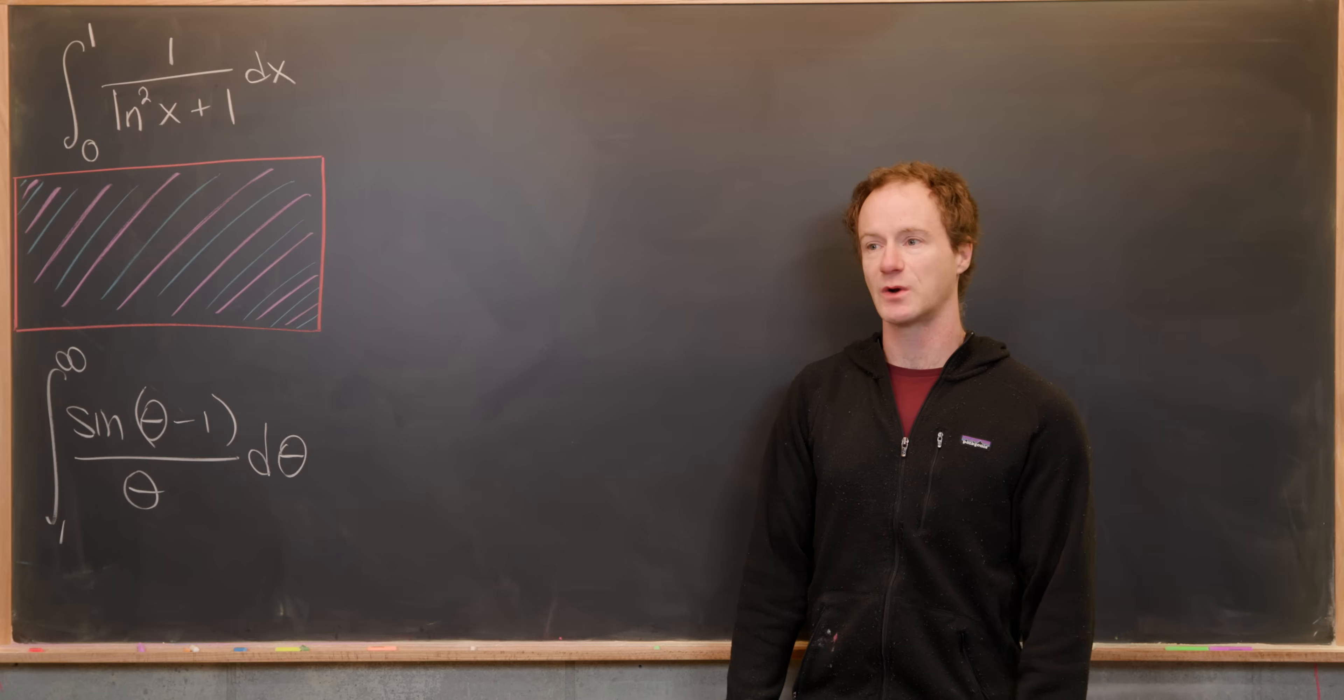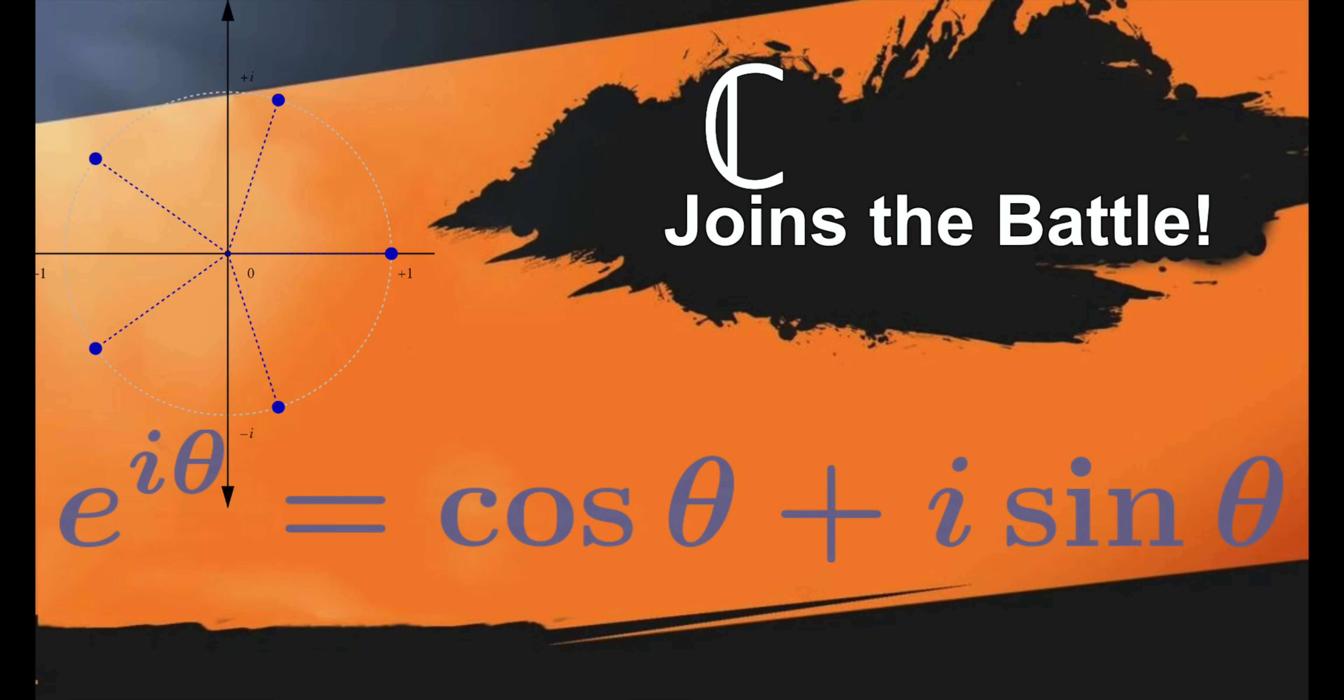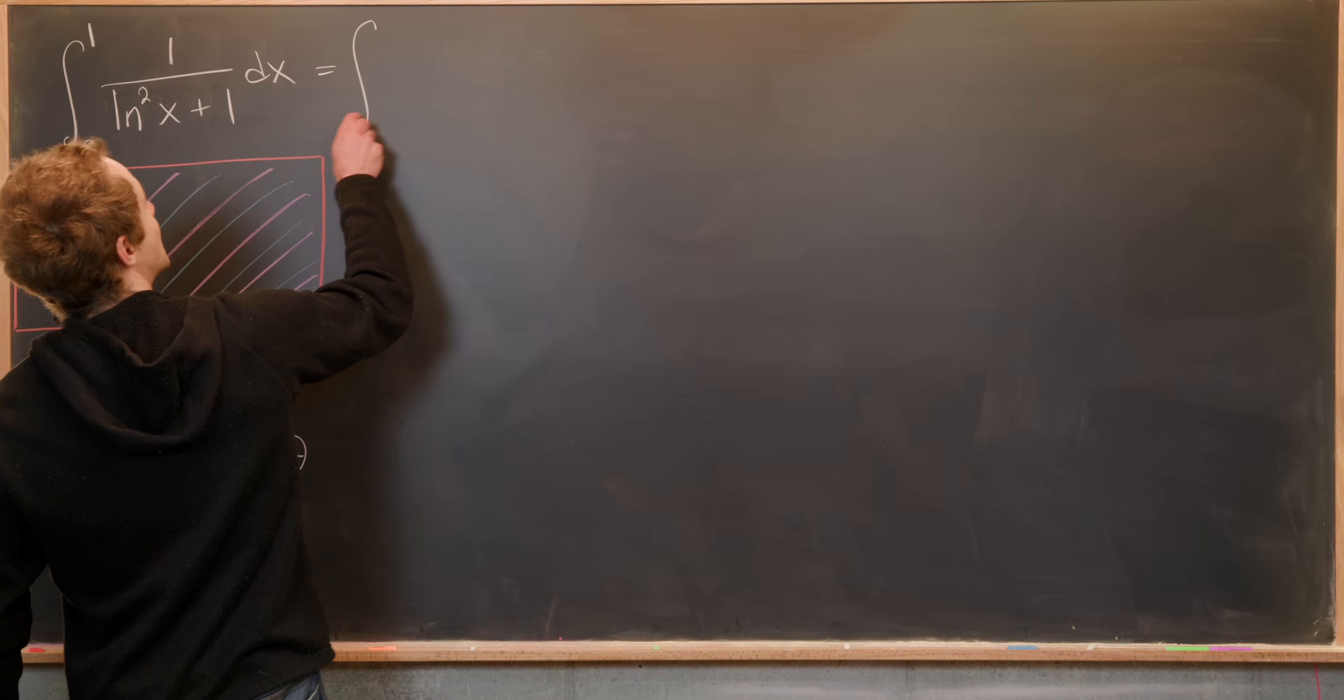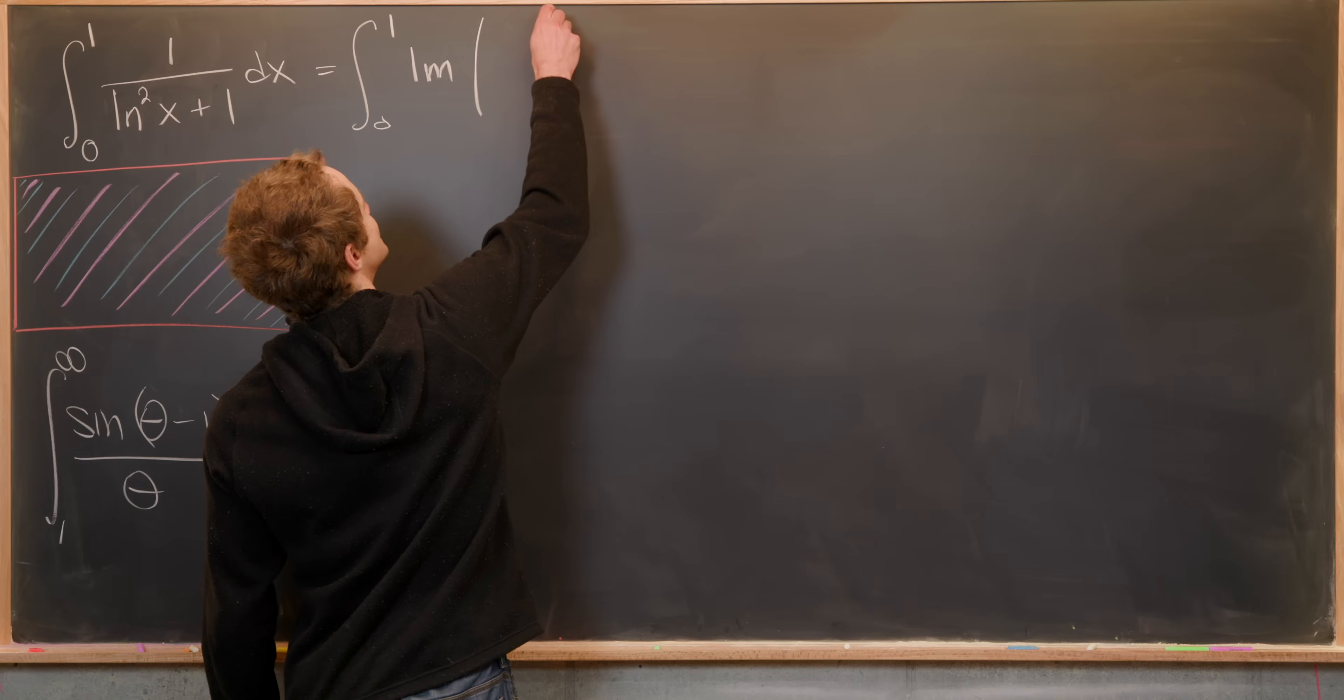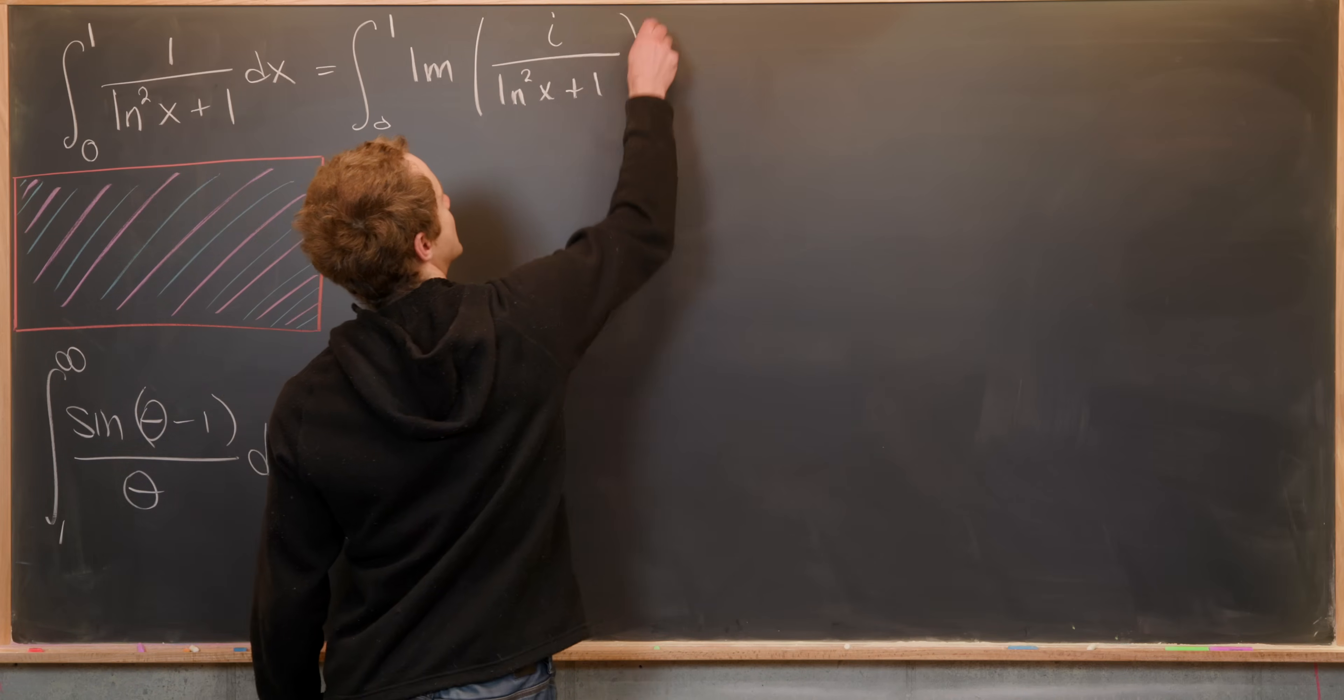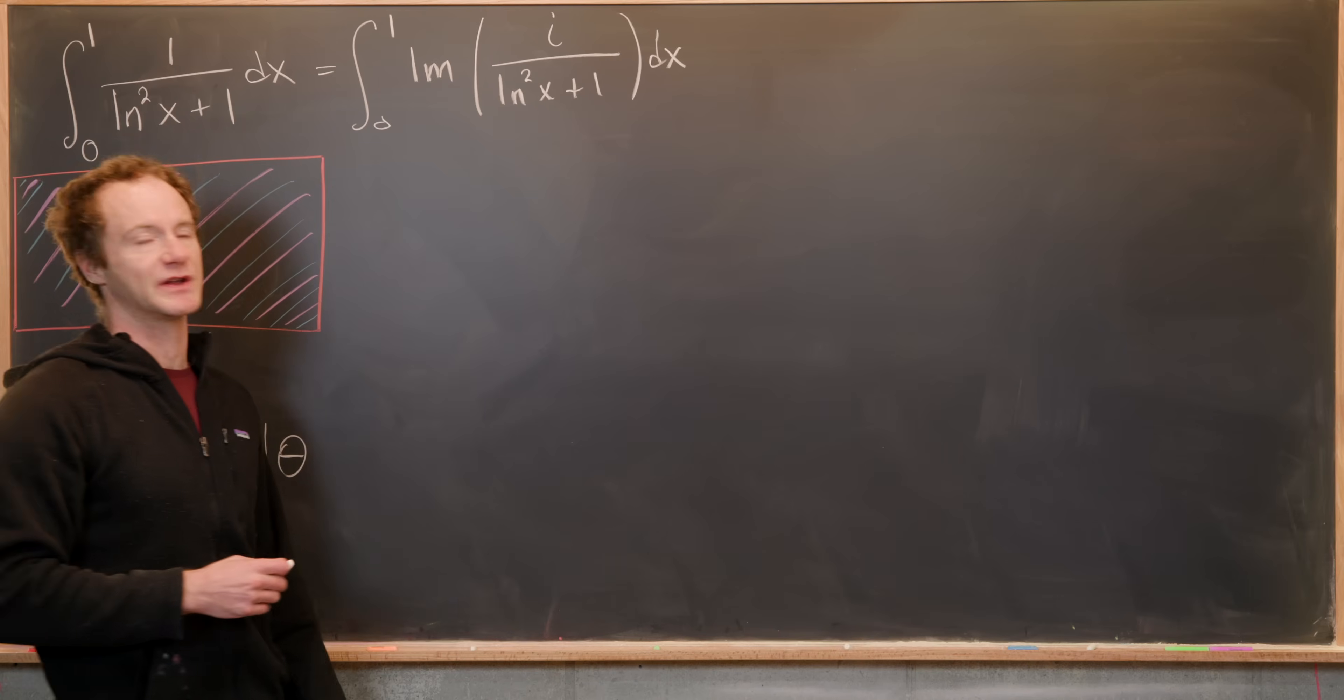The very first thing that we're going to do, which really emphasizes this entire trick, is to translate this to something having to do with complex numbers. I'm going to notice that this guy right here can be written as the imaginary part of i times itself. So here we've got the imaginary part of i/(ln²(x) + 1) dx. Just by the definition of the imaginary part, that's pretty clear.